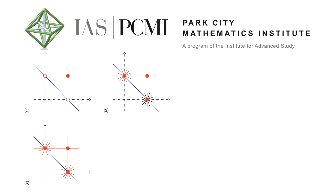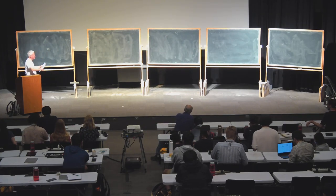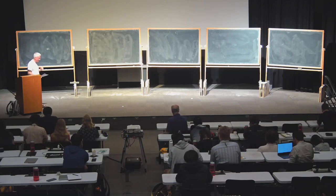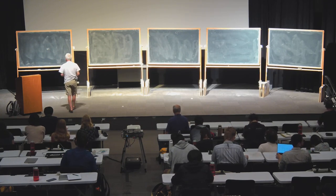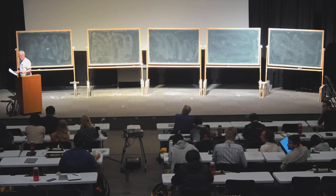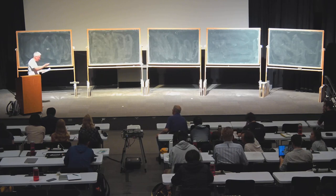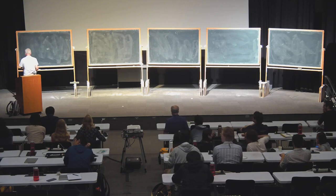We greet Fabien Morel again, who will continue his talks on A1 algebraic topology. Thank you very much — this is a sequel of my first talk last Monday, where I gave a general introduction to A1 homotopy. I will try to give you some very concrete examples and computations today. I will only talk about unstable homotopy theory.